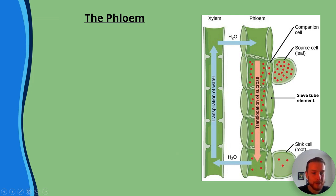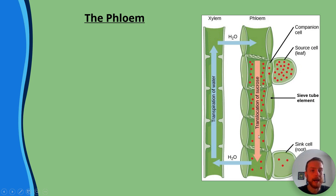The phloem is made of these hollow cells — each individual cell is called a sieve tube element. They do have a cell membrane and cell wall, but they have reduced organelles and a hollow space in the middle so sucrose can be transported through them. At either end they have sieve plates.